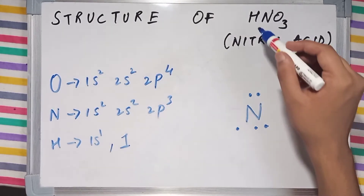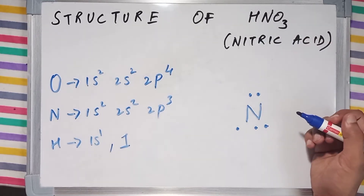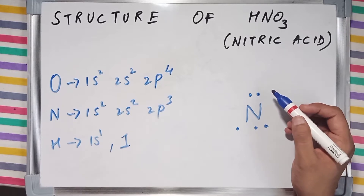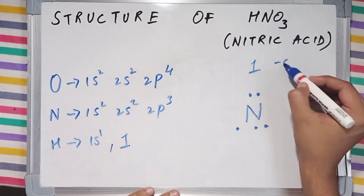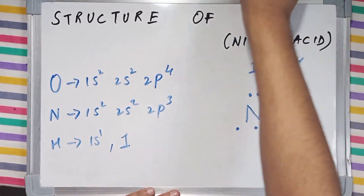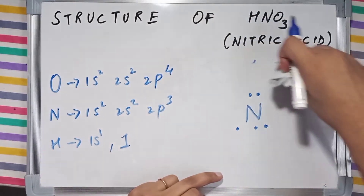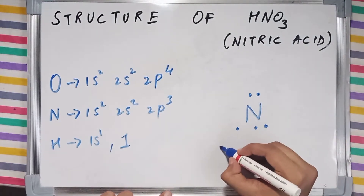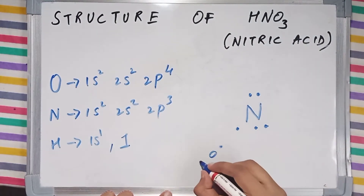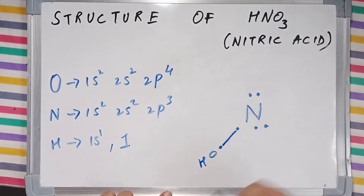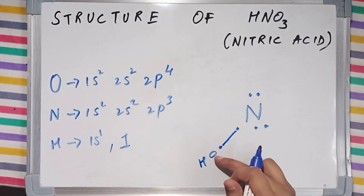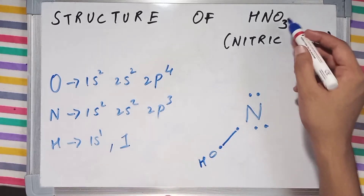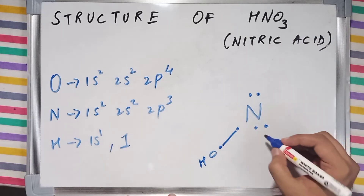We have one atom of hydrogen in HNO3, so that many O-H bonds are going to be present in the molecule, which means one O-H bond. We are going to make an O-H bond here having a single bond, because the other bond of oxygen is made with hydrogen, and now we are left with two atoms of oxygen.